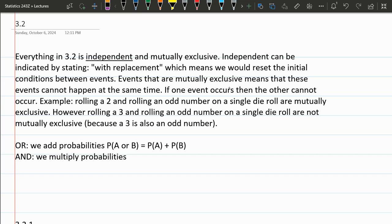But independent only matters when there's more than one event that you're looking at, or more than one outcome. And mutually exclusive means they both cannot occur at the same time.